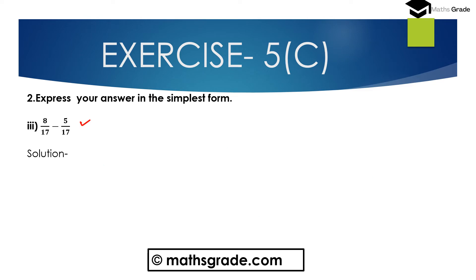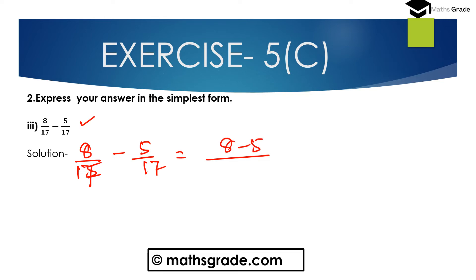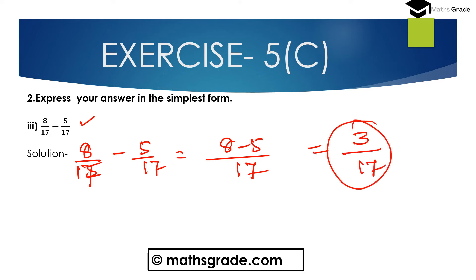Now question number 3: 8 divided by 17 minus 5 divided by 17. Both are like fractions having equal denominator 17. When we subtract two like fractions, just subtract the numerators divided by the common denominator. So 8 minus 5 is 3, divided by 17. And 3 divided by 17 is in the simplest form. So 8 divided by 17 minus 5 divided by 17 equals 3 divided by 17.